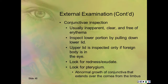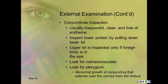For conjunctiva inspection: it's normally clear and free of erythema. Inspect the lower lid by pulling down the lower lid. The upper lid is inspected only if a foreign body is suspected. Look for redness or exudate and look for pterygium—the abnormal growth of the conjunctiva that extends over the cornea from the limbus.